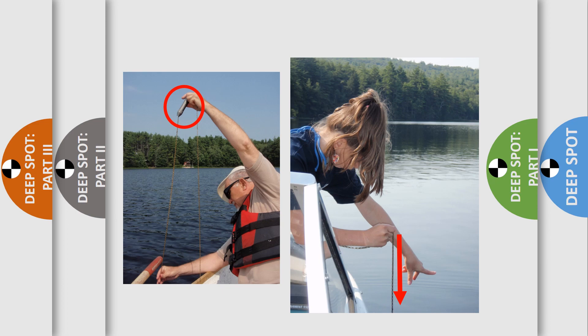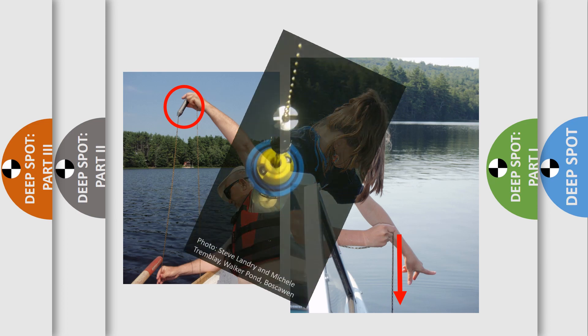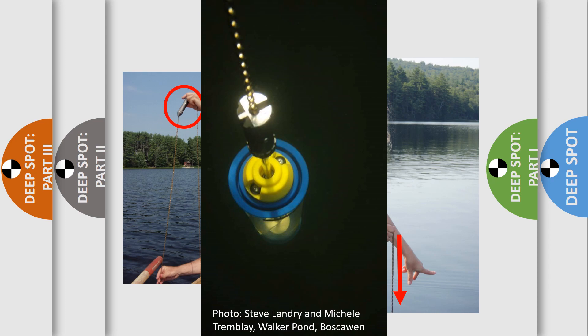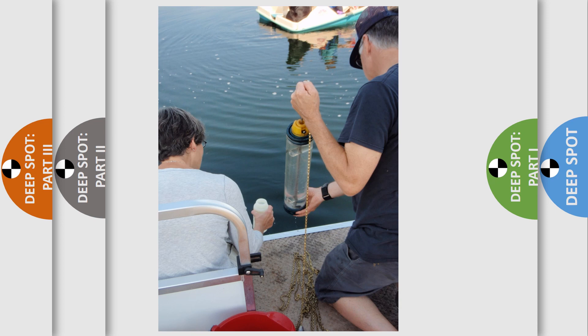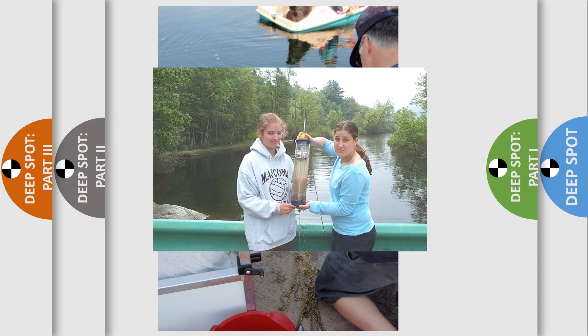Then send the messenger down the chain to close the bottle. Once closed, pull the bottle up through the water column. When it reaches the surface, grab the Kemmerer bottle by the rod to lift it out of the water. Then support the bottle on the bottom so it doesn't open up. Remember to check for any sediment in the bottle. If you observe sediment, start over. Sample at a slightly shallower depth or wait for the lake bottom sediment to settle out.